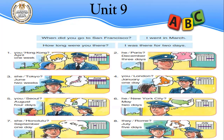Picture five: you and Seoul, August, four days. When did you go to Seoul? I went in August. Since there are two people, we say: we were there for four days. Picture six: he, New York City, May, two days. When did he go to New York City? He went in May. How long was he there? He was there for two days.